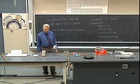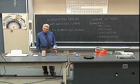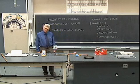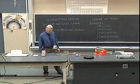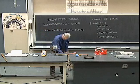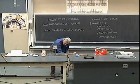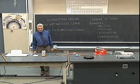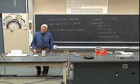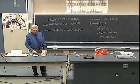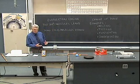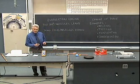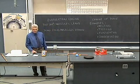Now we can demonstrate that the boiling point temperature depends on atmospheric pressure by turning off the heat, letting the water cool off a little, and then re-boiling the water — not by raising the temperature but by reducing the pressure.